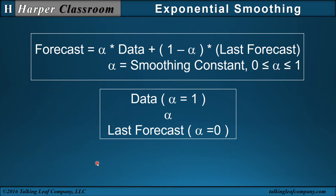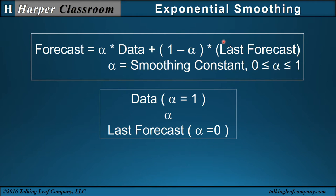Let's first look at the concept behind exponential smoothing. The forecast we're obtaining today for tomorrow is a combination of the data today and the last forecast we have today, which was generated yesterday. So today we have a forecast and data, and we're combining those with alpha to come up with a forecast for tomorrow.